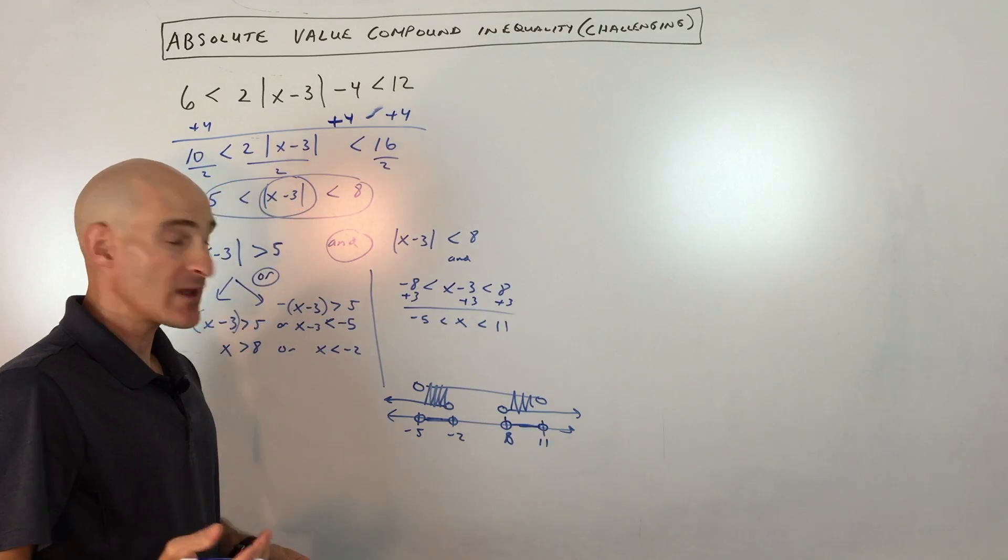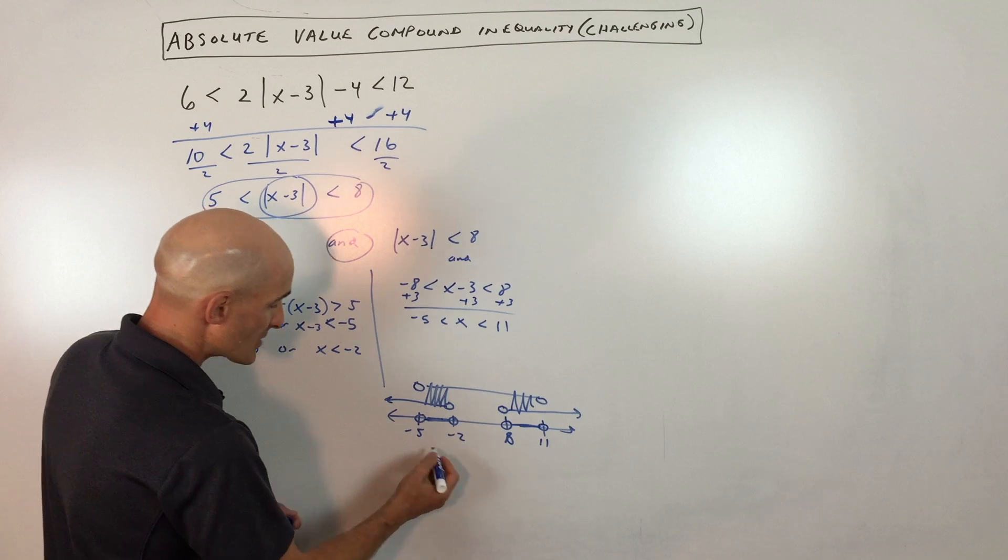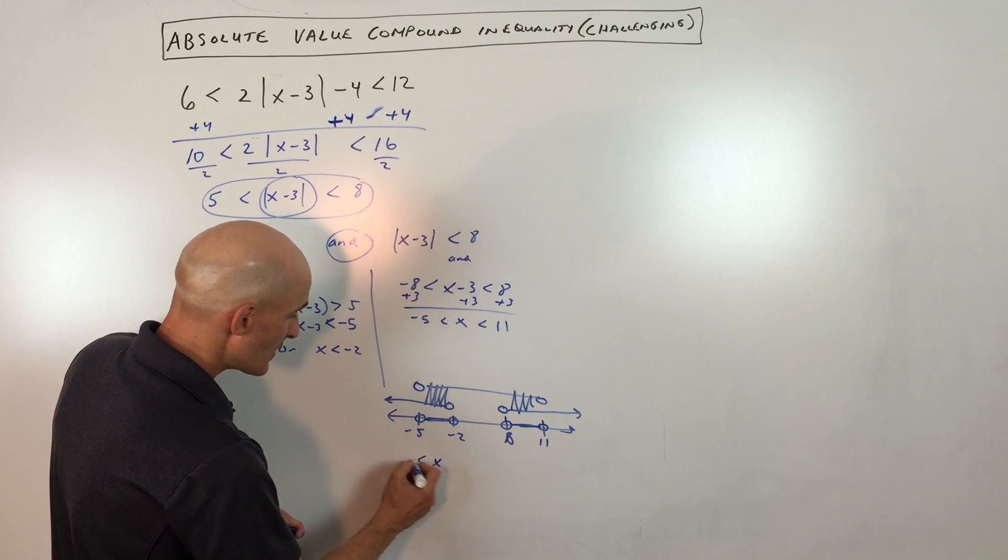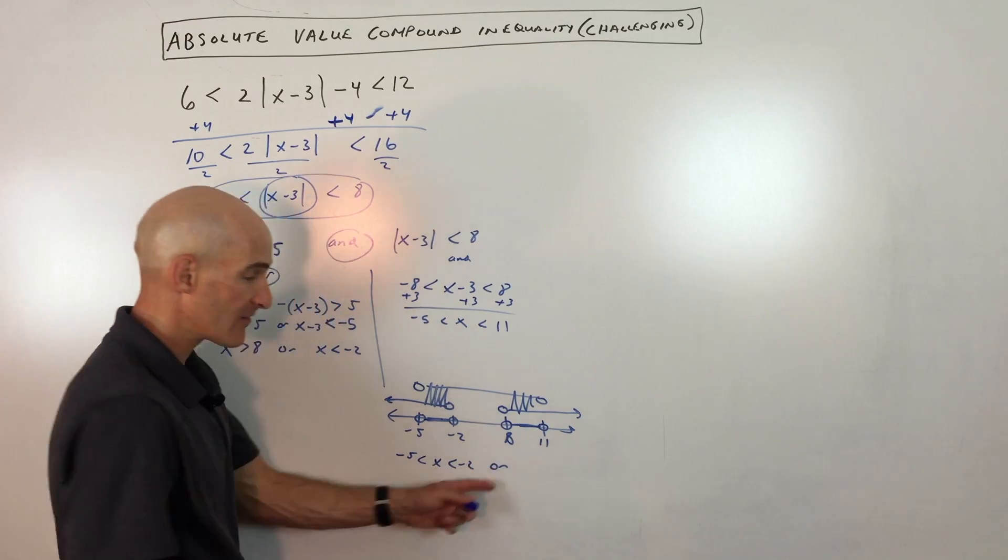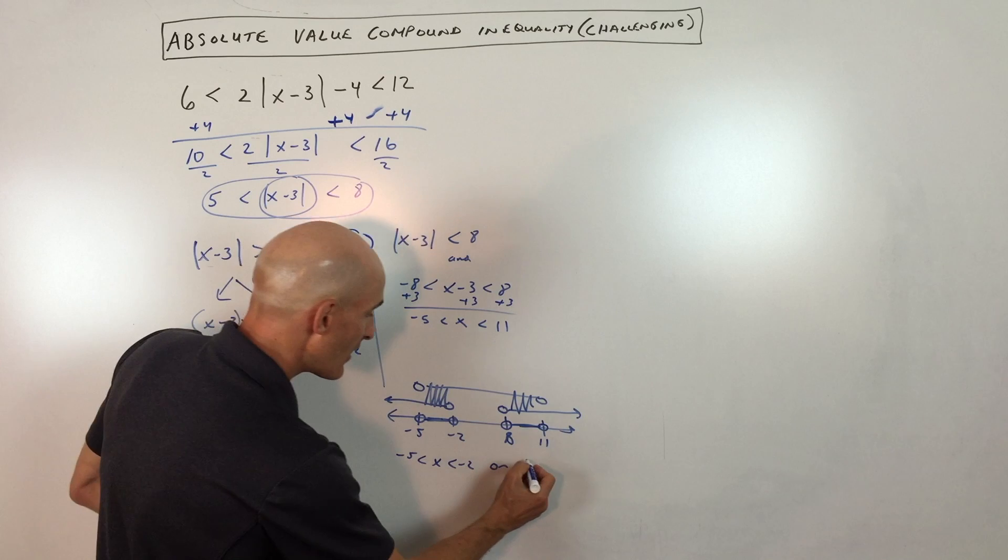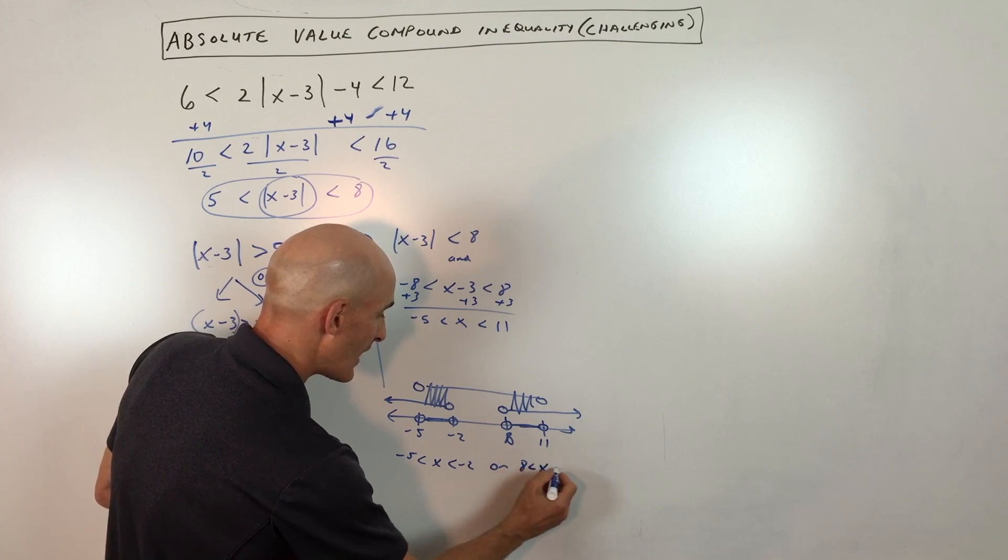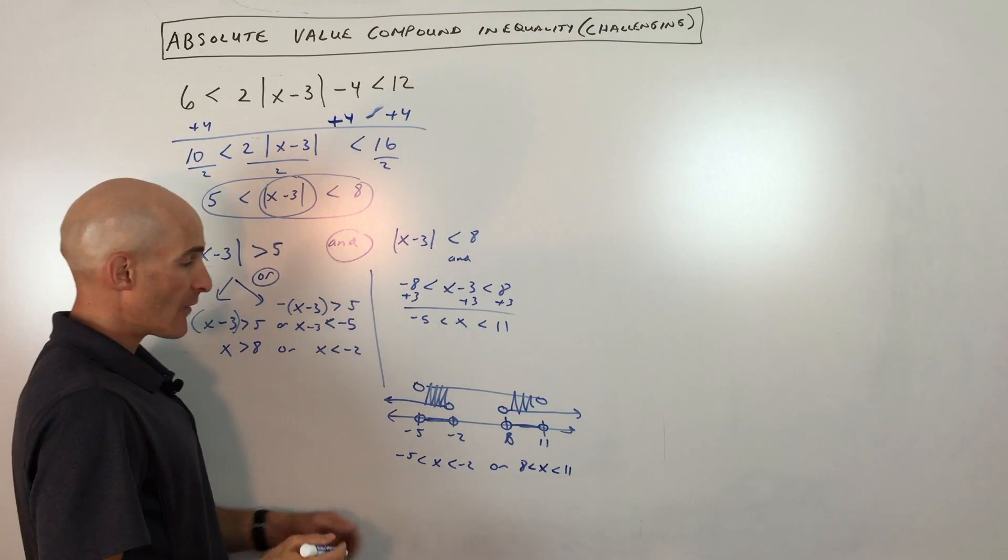So if you want to write this as a solution, you could say x is greater than negative 5 and less than negative 2, or, or means, in math, it means union or both, x is greater than 8 and less than 11.